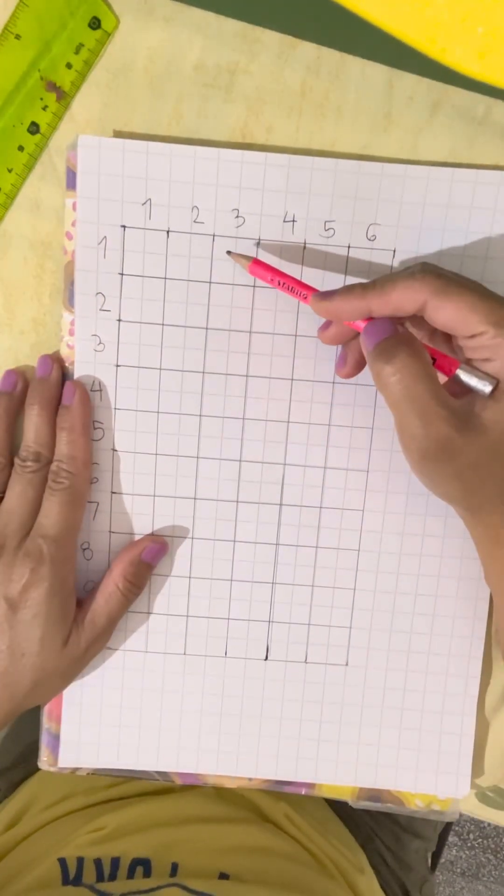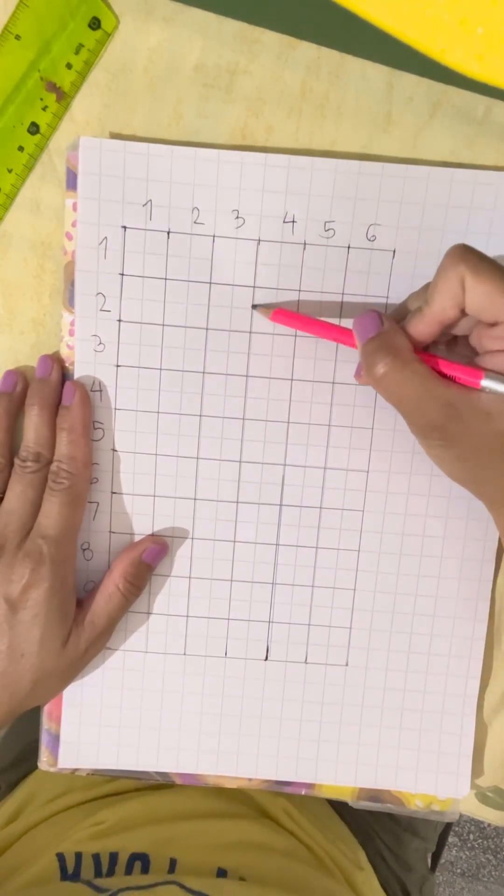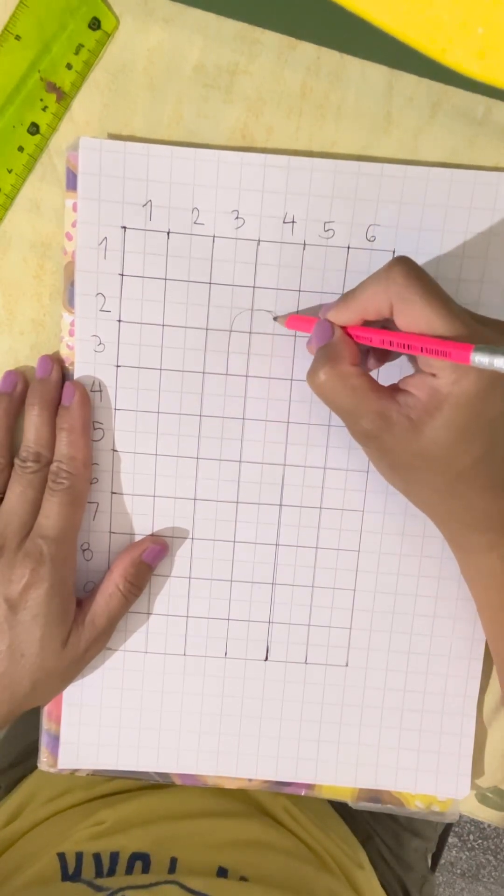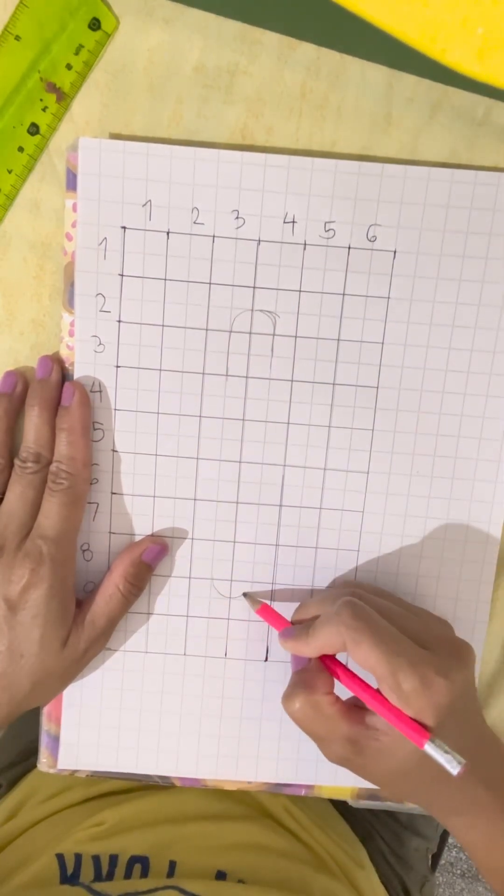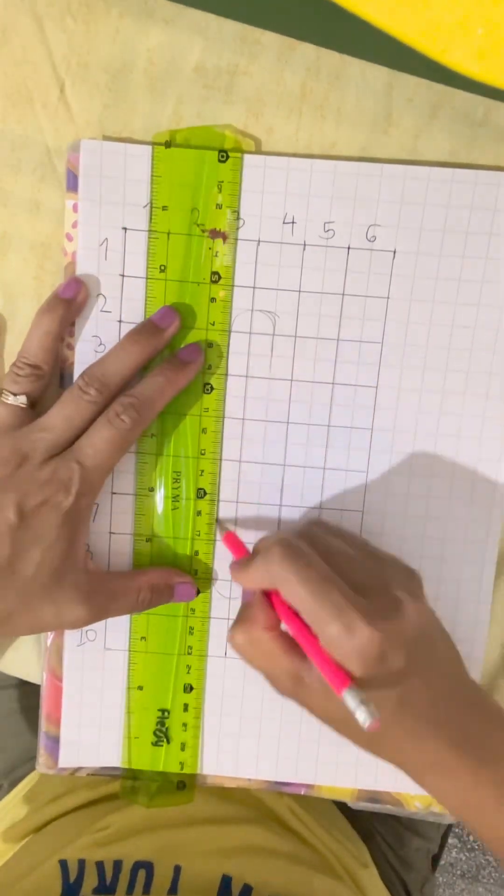Then I start to draw the number 6. I write the numbers on the side so you can see which column and row I use for my 6. I use pencil so I can erase the line if I want to make adjustments.